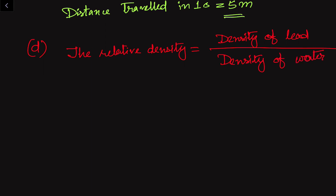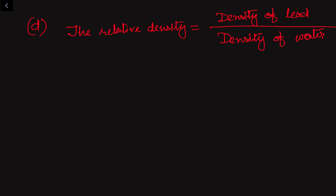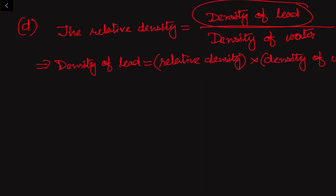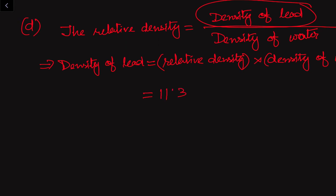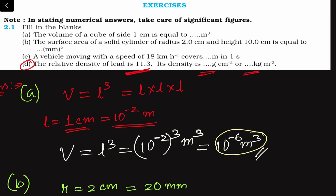The relative density formula is: relative density = density of lead / density of water. So density of lead = relative density × density of water = 11.3 × 1 gram per centimeter cube, because the density of water is 1 gram per cm³. Therefore the density of lead is 11.3 gram per centimeter cube.